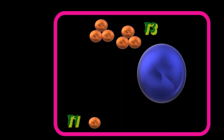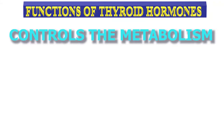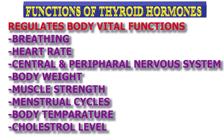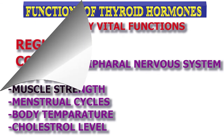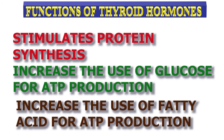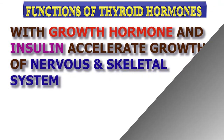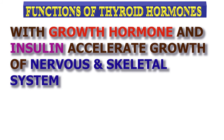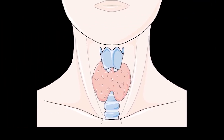Functions of thyroid hormones include controlling metabolism and regulating vital body functions: breathing, heart rate, central and peripheral nervous system activity, body weight, muscle strength, menstrual cycles, body temperature, and cholesterol levels. Thyroid hormones also regulate oxygen consumption, stimulate protein synthesis, increase use of glucose and fatty acids for ATP production, and together with human growth hormone and insulin, accelerate body growth — particularly of the nervous and skeletal systems.